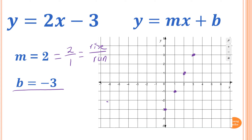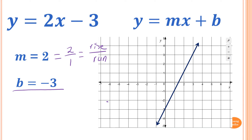Once you have lots of points, just use a ruler to connect them together and you get a straight line. Start at the y-intercept which is minus 3, then because the gradient is positive 2, go up 2, across 1 — up 2, across 1 — and connect together. That gives you a straight line.